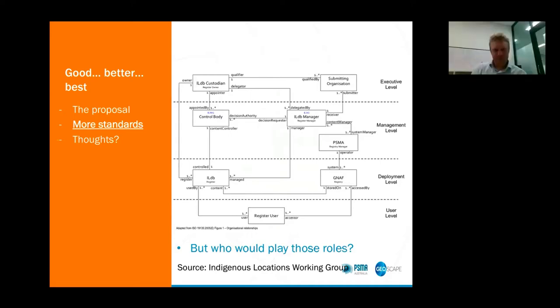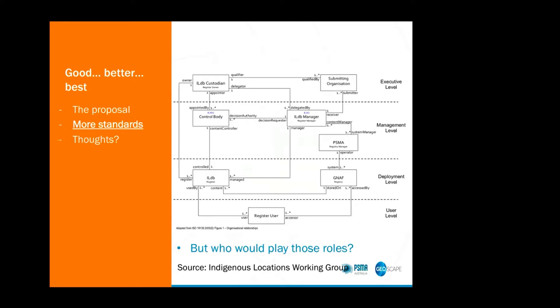Ultimately, I've spoken about a whole bunch of different roles. At the top, you've got a register owner who appoints a control body — they effectively have the decision authority. You then have someone managing the register who requests decisions from the control body in order to make sure the content is kept up to date, then makes edits to the register. They may choose a separate registry manager to effectively host or store that register and make it accessible, and that's then used by the users.